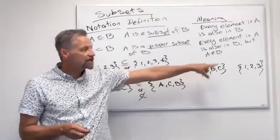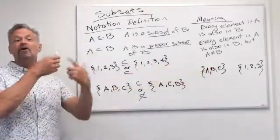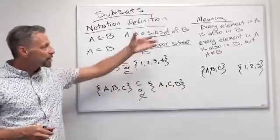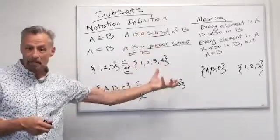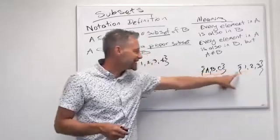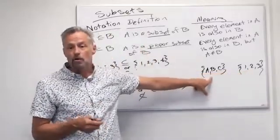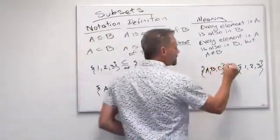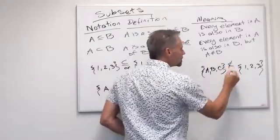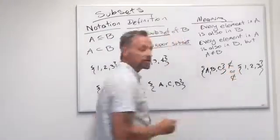And then lastly I have {a,b,c} and {1,2,3}. Remember from cardinality, these would be equivalent sets—they have the same number of elements in them. But obviously this set doesn't have any of these numbers, let alone all of them, so it's not a subset. Or we could say it's not a proper subset either.